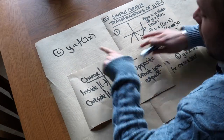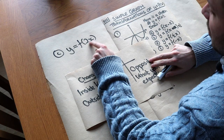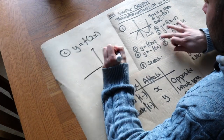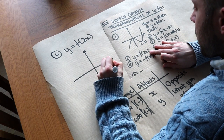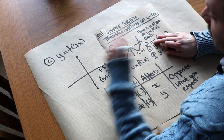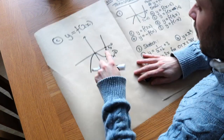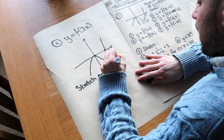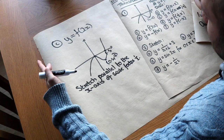For part c, y equals f of 2x. That 2 is inside the function, so it's going to affect the x values as the opposite — if x has been multiplied by 2, we do the opposite and halve the x values. So the minimum point (1, −2) becomes (0.5, −2). The x-intercept at 3 becomes 1.5. The point (0, 0) stays the same. If we describe this transformation, it's a stretch parallel to the x-axis of scale factor one half — in other words, we're squishing it, making it half as wide.